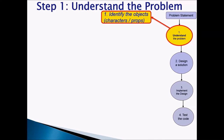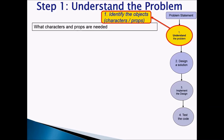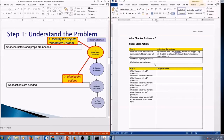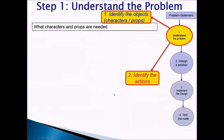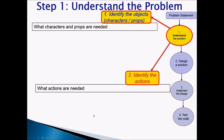Now you will identify the objects. You can choose your own objects like dog or monkey, etc. Think about what characters and props are needed. Next, you will identify the actions — what are they going to do? Like move, turn, roll over, flip, dance, etc. Think about what actions are needed.